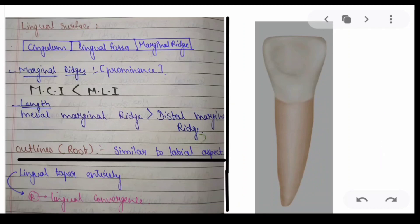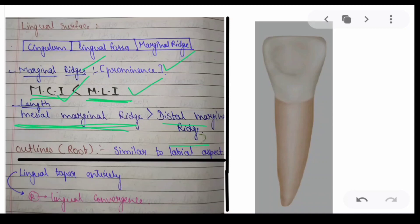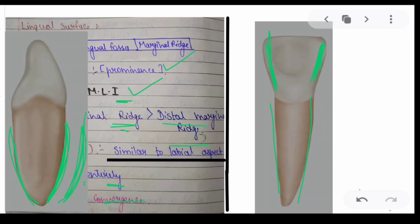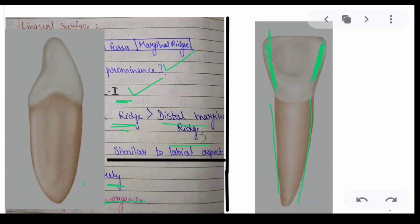Now looking at the lingual surface, we discuss three things: the cingulum, the lingual fossa, and the marginal ridges. Coming to the marginal ridges — between the mesial marginal ridge and the distal marginal ridge, the mesial marginal ridge has a greater length than the distal marginal ridge. The root surface is entirely tapered lingually.